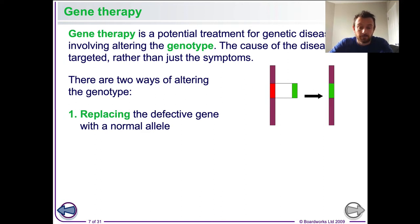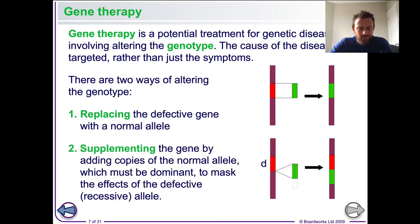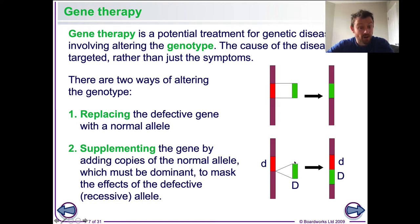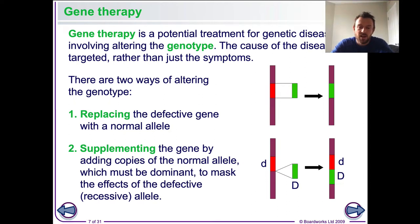The second strategy is to supplement — if we can't cut out the defective gene, we can add in a functioning allele. Because the condition is recessive, the dominant functioning allele would mask the defective one. This would not work for a dominant genetic condition like Huntington's disease.